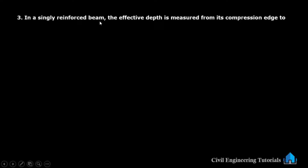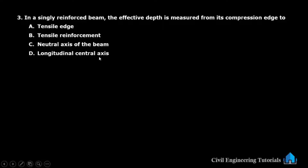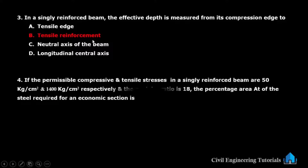In a singly reinforced beam, the effective depth is measured from its compression edge to — option A: tensile edge, option B: tensile reinforcement, option C: neutral axis of the beam, option D: longitudinal central axis. The answer is option B — the effective depth is measured from the compression edge to the tensile reinforcement.